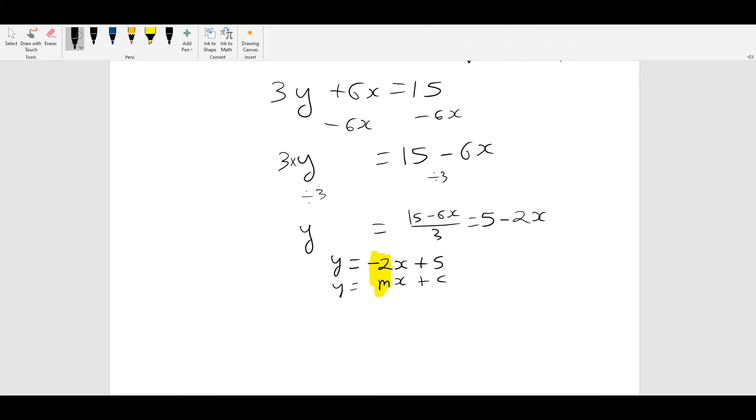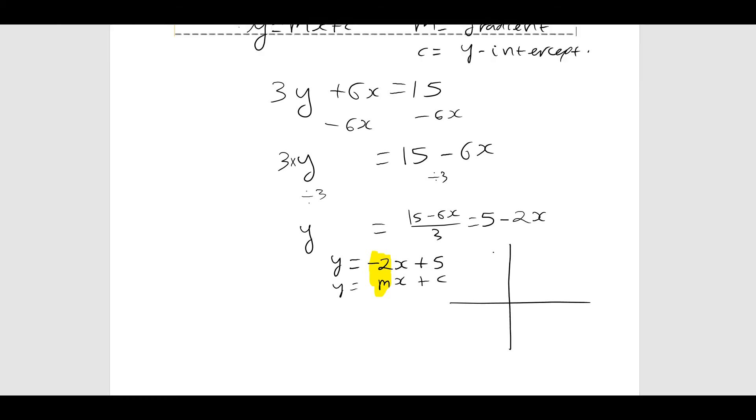So basically my line is going to look something like this. It's going to have a downward slope, fairly steep, cross 1, down 2, so it's going to be something like that.